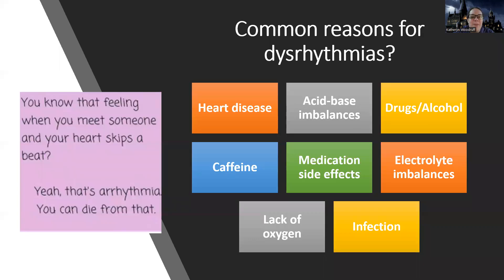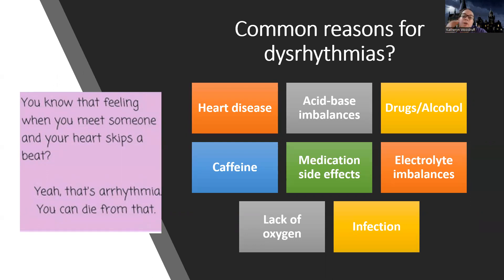Let's talk about some common reasons for dysrhythmias. Remember, everything with dysrhythmias comes down to perfusion and oxygenation. It can cause low cardiac output, oxygenation issues, and stop perfusion to organs and tissues. Things like heart disease — heart failure, heart attacks, coronary artery disease, angina, hypertension — could all eventually lead to problems in the heart and problems with the heart's electrical system.